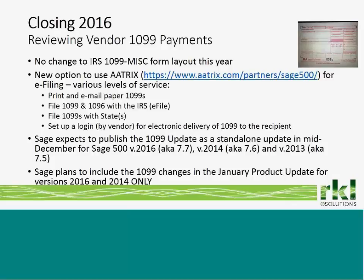The prerequisite for the Atrix standalone update is that you have the January 2016 update of your software for either version 2016, 2014, or 2013 already in place. In addition, Sage typically releases the 1099 update in the following January product updates. This year, they will only be offering that 1099 update in the January product update for Sage 500 versions 2016 and 2014. If you are on 2013 or earlier, you would not have the ability to use the Atrix solution via that January product update.